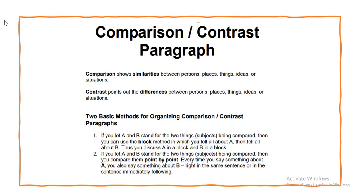Let us come to the next point: two basic methods for organizing comparison or contrast paragraphs. Number one — if you let A and B stand for two things or subjects being compared, you can use the block method. In the block method, you tell all about A, then tell all about B. Thus you discuss A in one block and B in another block.